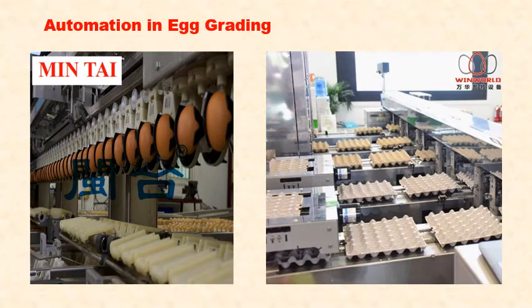Nowadays there is a lot of automation in commercial egg grading for large farmers, and there are online processes for grading and inspection of eggs. On the right side you can see moving top trays for direct inspection, and on the left side individual eggs are moving along the line.